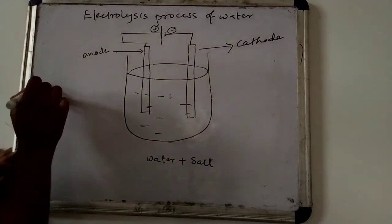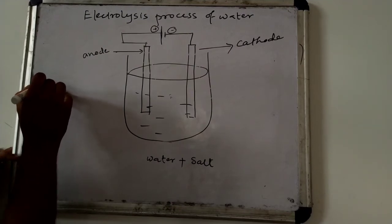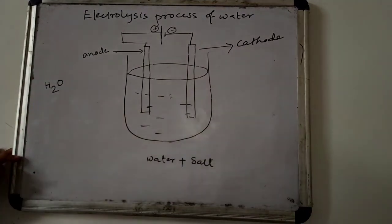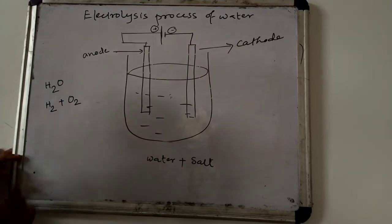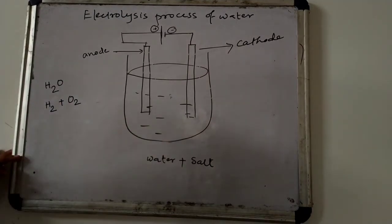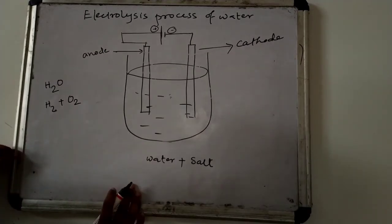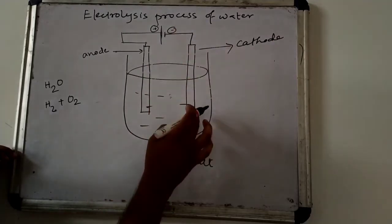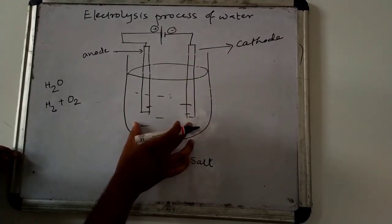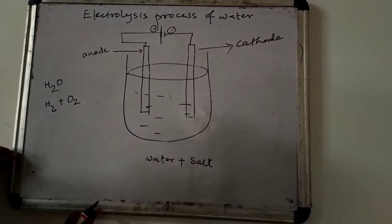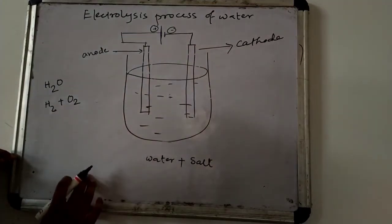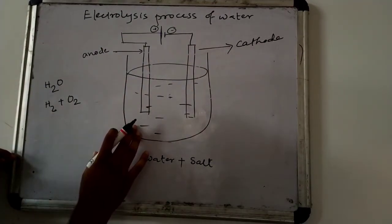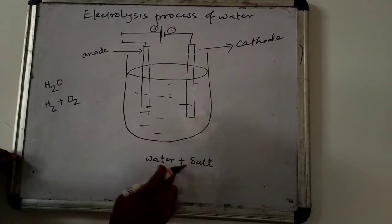Now our chemical formula for water is H2O, which means water consists of hydrogen and oxygen. The solution used in the electrolysis process is called the electrolyte. Here the electrolyte is the solution of water and salt.